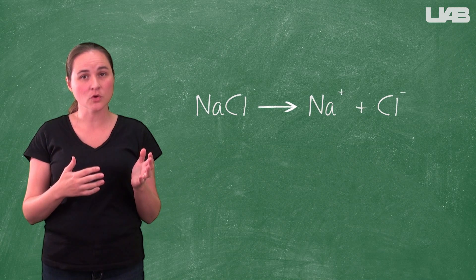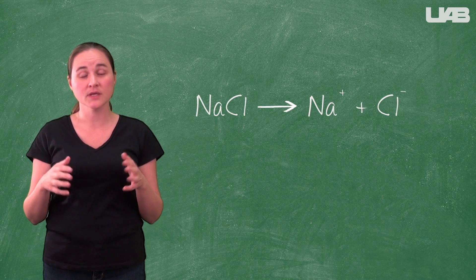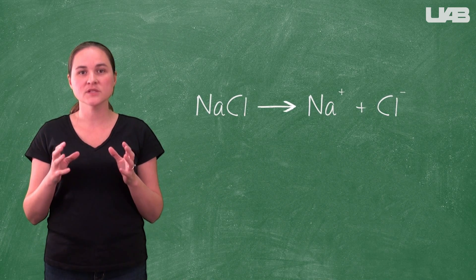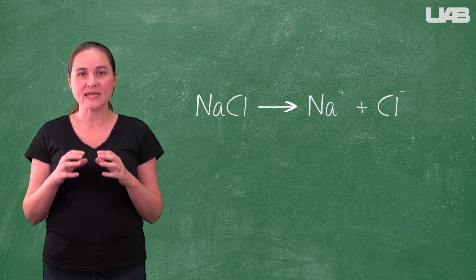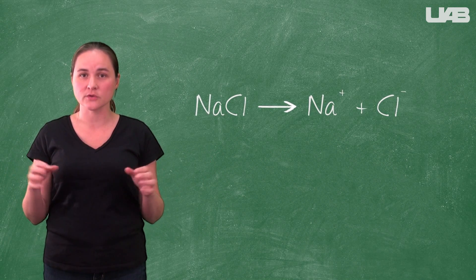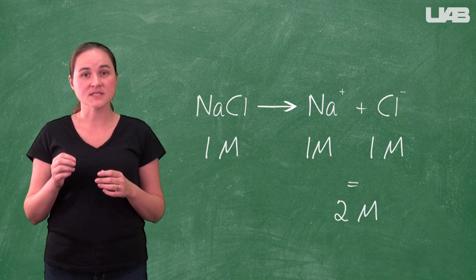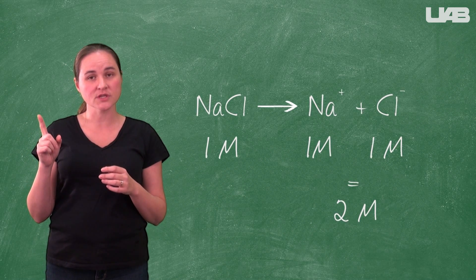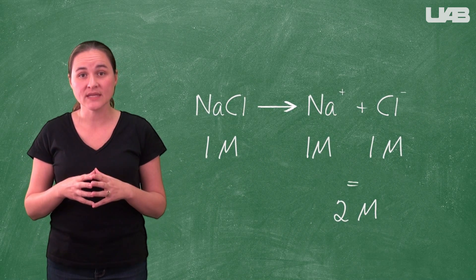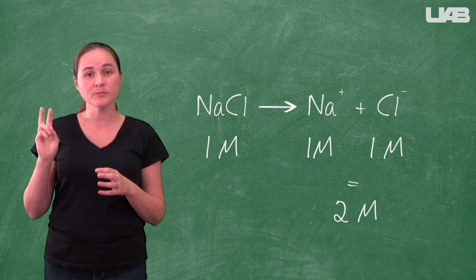When a salt, like sodium chloride, is dissolved in a liquid, like water, we know that the salt is a strong electrolyte and it will completely dissociate at low concentrations. Thus, if you have a one molar solution of sodium chloride, you really have a two molar solution of particles.